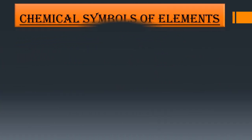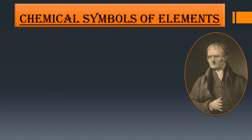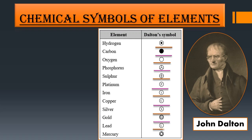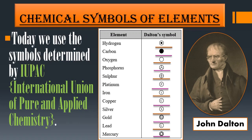Let's first study chemical symbols of elements. Dalton used certain signs to represent elements. Here is a chart of some elements which Dalton discovered. The symbols are given in the next column — for hydrogen, carbon (black circle), oxygen (blank circle), and for phosphorus, sulfur, platinum, iron, copper, silver, gold, lead, and mercury. These are the various symbols Dalton used to represent elements.